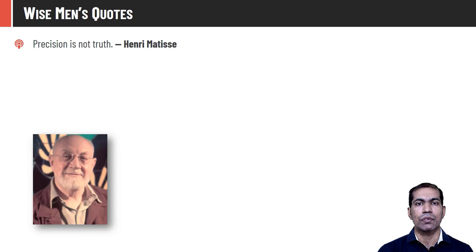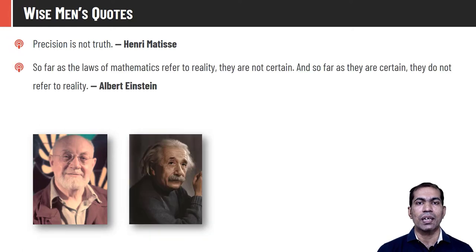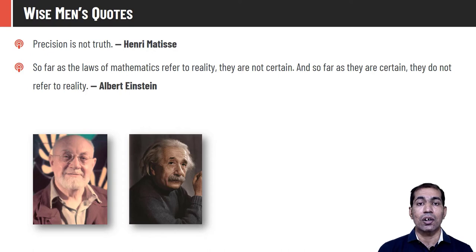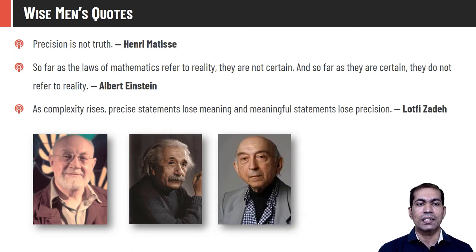Henry Matisse says, 'Precision is not truth.' Many times we are running after precision, but in certain cases precision is not as important as the information. Albert Einstein said, 'So far as the laws of mathematics refer to reality, they are not certain, and so far as they are certain, they do not refer to reality.' So even laws of mathematics are not always certain.